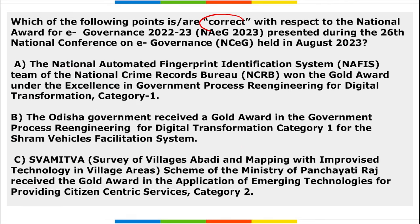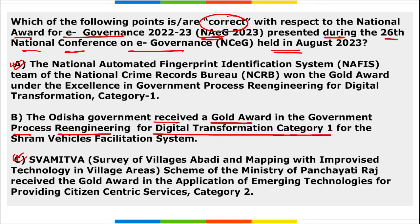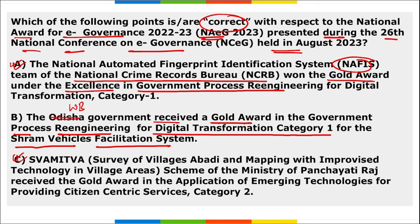Which of the following are correct with respect to the National Award for E-Governance (NAEG) presented during the 26th National Conference on E-Governance held in August? Options A and C are right, but option B is wrong. Option B states that the Odisha government received a gold award in the government process re-engineering for digital transformation category 1. Remember, the gold award was actually received by the West Bengal government.